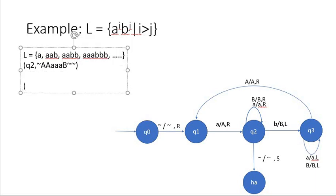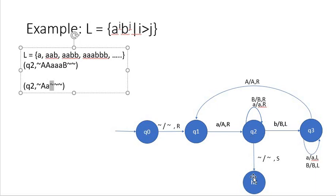You might ask: what if my string contains only a's with no b? Let's say my string has only two a's. From q0, tilde is kept and we go to q1. In q1, small a is converted to capital A and we move to state q2 and go right. Now my tap head points to another small a — kept as is going right. Then my tap head reaches tilde, and from q2 we enter the accepting state. This Turing machine accepts all strings where the number of a's is greater than the number of b's and rejects all others. Thank you.